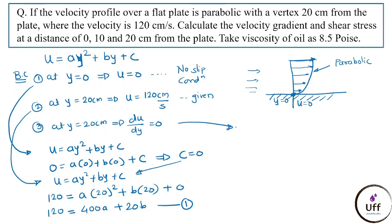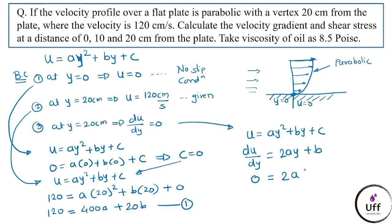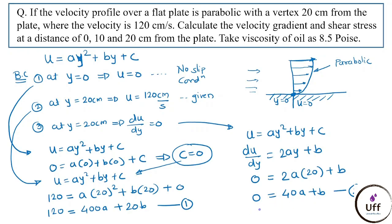Differentiating u = ay² + by gives du/dy = 2ay + b. Applying the third boundary condition (du/dy = 0 at y = 20): 0 = 2a(20) + b = 40a + b. This is Equation 2. Multiplying Equation 2 by 10 gives Equation 3: 0 = 400a + 10b.